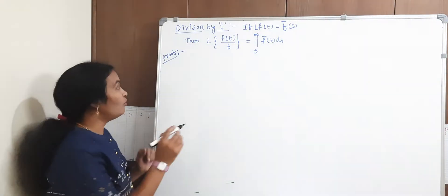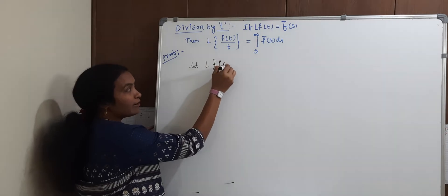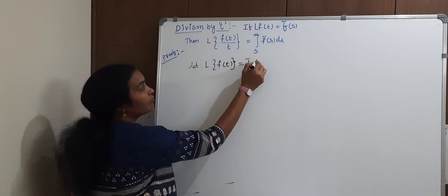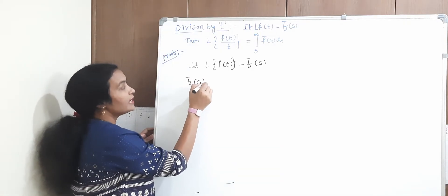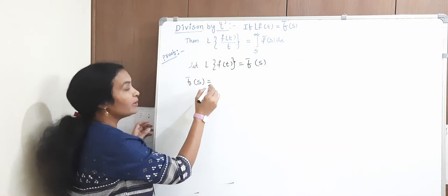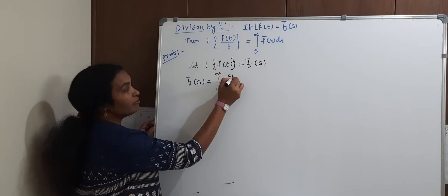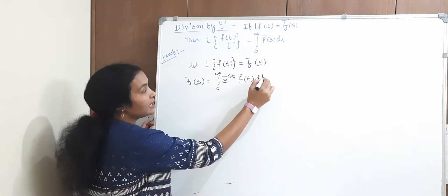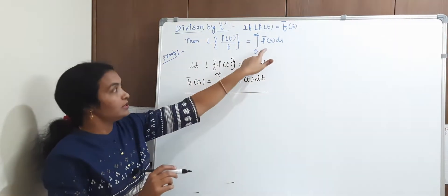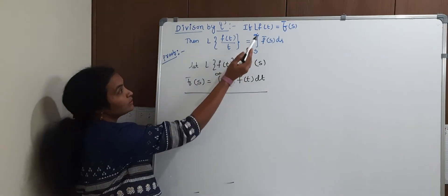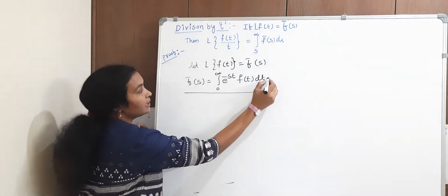Now, what is our basic definition? L{f(t)}, the Laplace of f(t), is equal to F̄(s). We know from the standard Laplace definition that F̄(s) is nothing but L{f(t)}, which equals the integral from 0 to infinity of e^(−st) f(t) dt. This is the Laplace definition. I need to take F̄(s) and just prove this — consider this as equation 1.